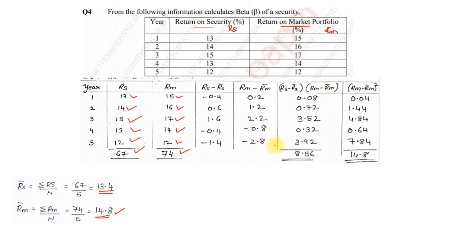Same way the next column is RM minus RM bar. So 15 minus 14.8, 16 minus 14.8, 17 minus 14.8, 14 minus 14.8 and 12 minus 14.8. We get the values as 0.2, 1.2, 2.2, negative 0.8, negative 2.8. Once you get that, the next column will be the product of these two columns. So RS minus RS bar into RM minus RM bar. We will get the value as 0.08, 0.72, 3.52, 0.32 and 3.92 and we need the total of that which comes to 8.56. Last column, the RM minus RM bar the whole square. So 0.2 square is 0.04, 1.2 square is 1.44 and so on. So we get 0.04, 1.44, 4.84, 0.64 and 7.84. We add up, we get the total value as 14.8.